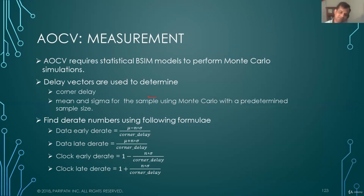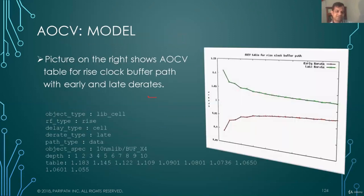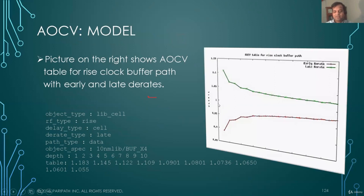These formulas are helpful — this is kind of the magic sauce for most people, and that's how the rate is calculated for AOCV. The AOCV model — this is actually a graph from a recent 10 nanometer library characterized a few months ago. As the depth increases on the x-axis, the rate number goes down; for early paths the rate number goes up. For both of them, the rate number comes close to one, meaning the variation is reducing, so the variation in delay is less as path depth grows.